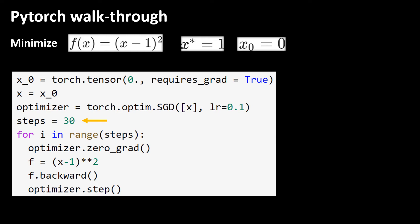Here we tell PyTorch that we do optimization for 30 steps.